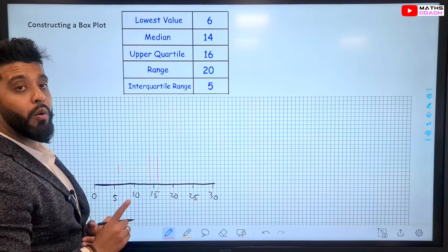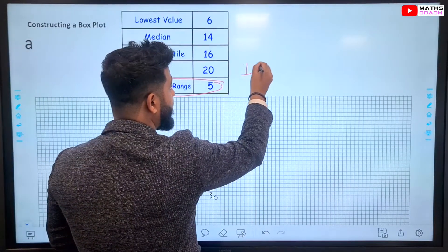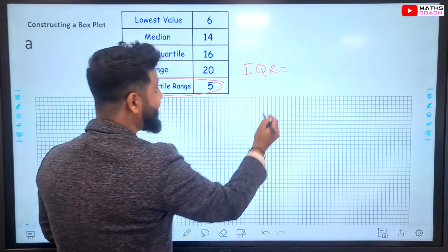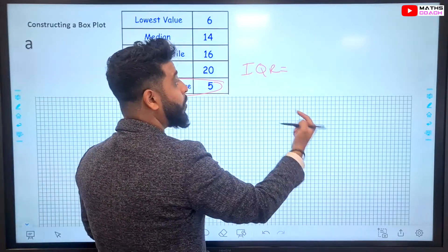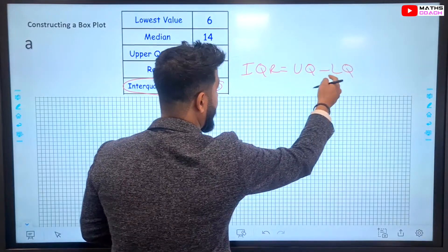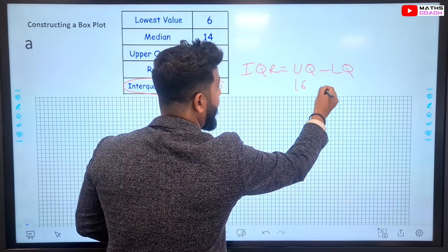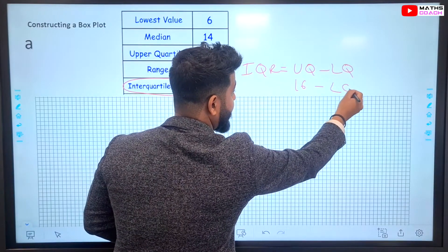We don't have the lower quartile, but we do have the interquartile range. And we know that the interquartile range is the lower quartile take away from the upper quartile. So, the upper quartile minus the lower quartile. And we do have the upper quartile, which is 16 minus the lower quartile.